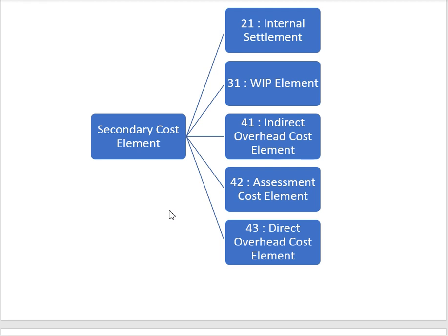Category 42 is used for assessment cost elements, and category 43 is used for direct overhead cost elements. When creating a costing sheet to calculate indirect overhead costs, we assign category 41. For direct costs like activity cost, machine cost, and labor cost, we use category 43. When creating activity types, we assign the category 43 cost element to calculate the cost of the activity.